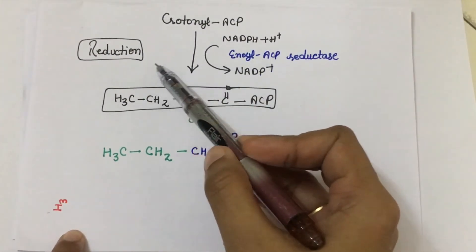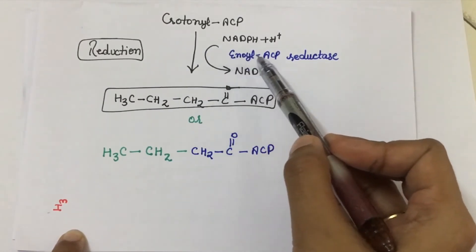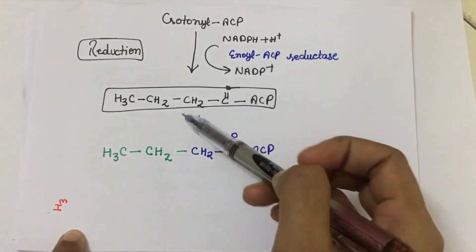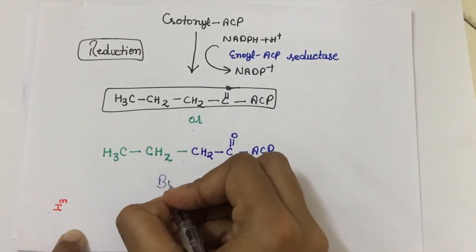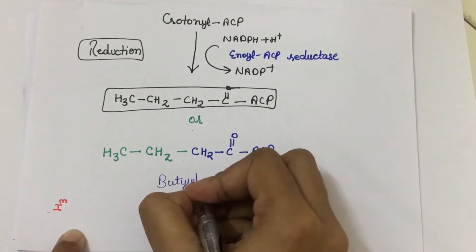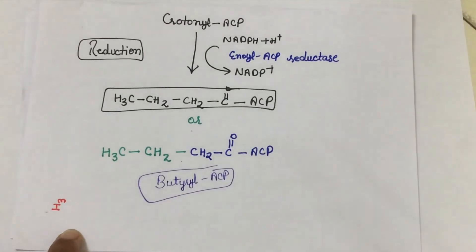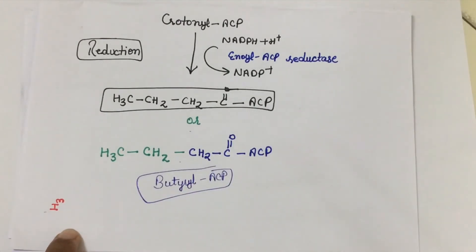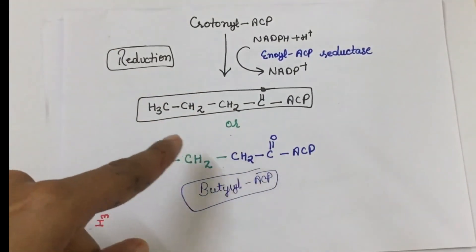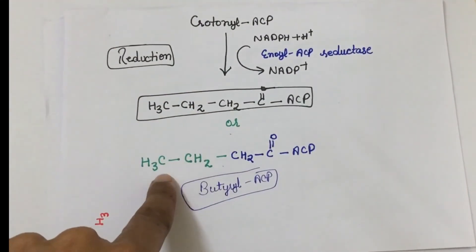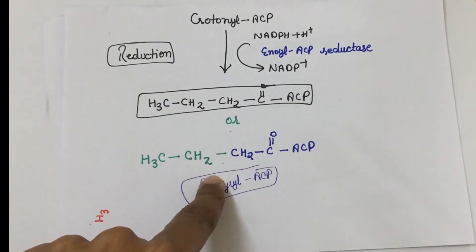After dehydration, the fourth step is reduction again. Crotonyl-ACP is reduced with the help of NADPH, and the enzyme catalyzing this is enoyl-ACP reductase. The product formed is butyryl-ACP. The first round of elongation produces this four-carbon butyryl-ACP — one, two, three, four carbons.